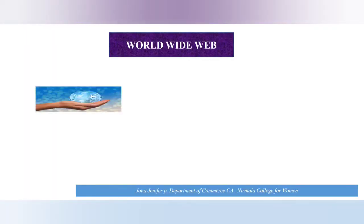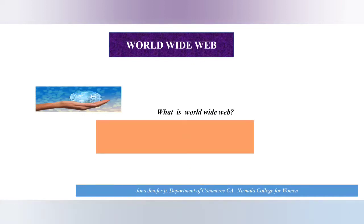WWW is a network of online content that is formatted in HTML and accessed via HTTP. The term refers to all the interconnected HTML pages that can be accessed over the Internet. First point: it is used to exchange information between users on the Internet.